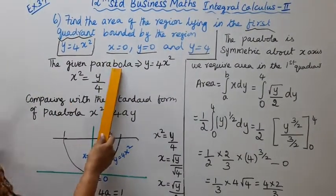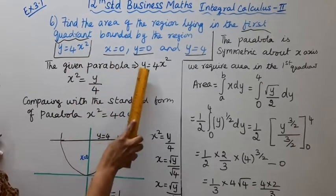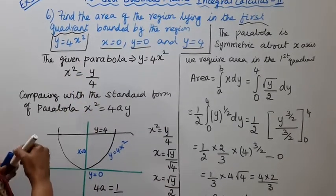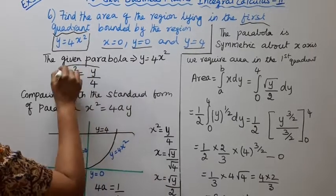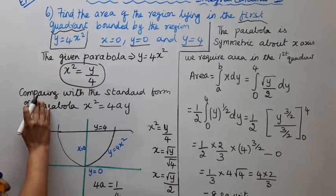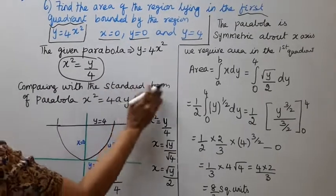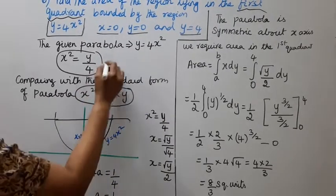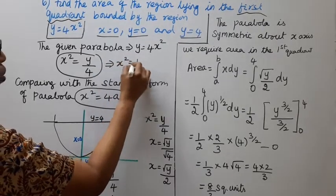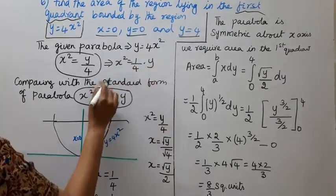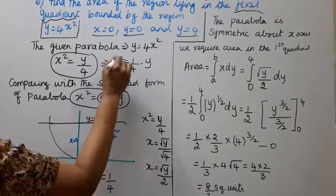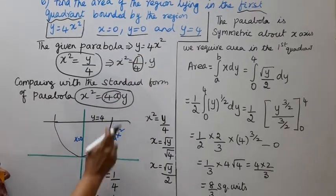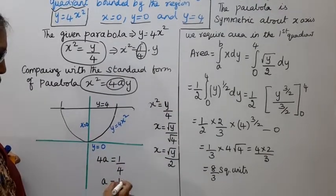The given parabola is y equal to 4x square. Comparing with the standard form of parabola x square equal to 4ay, we get x square equal to 1 by 4 into y. So 4a is equal to 1 by 4, giving a equal to 1 by 16.